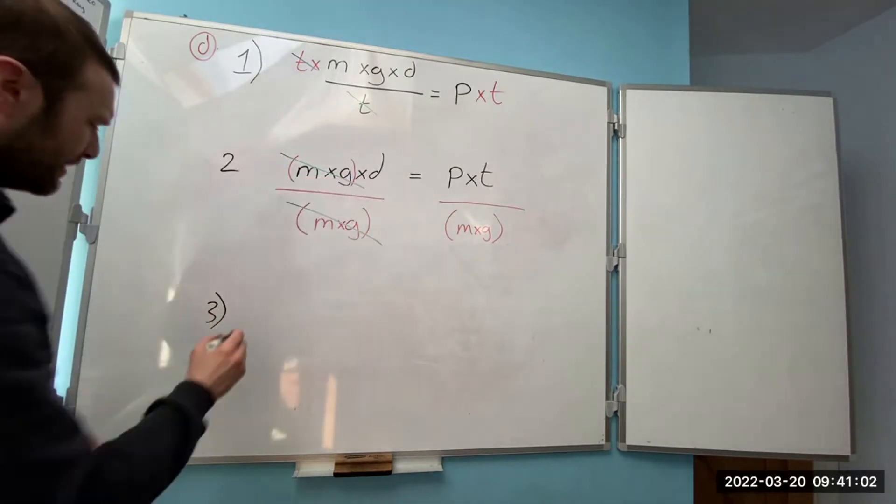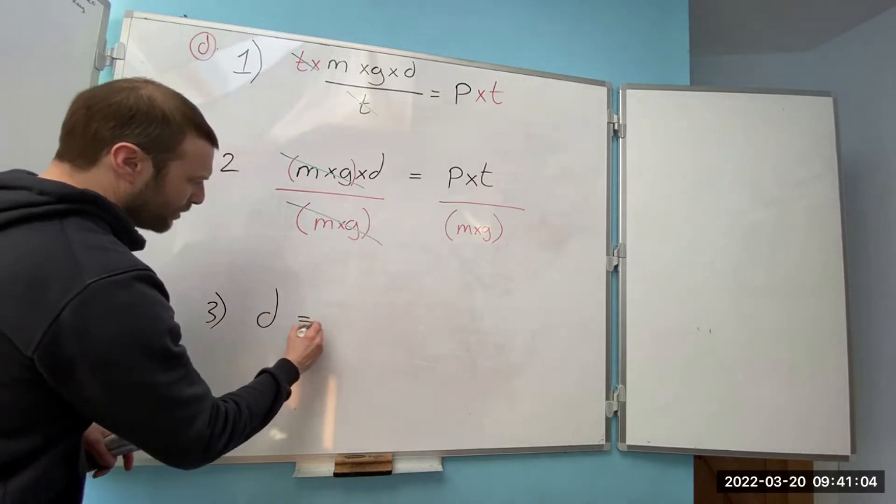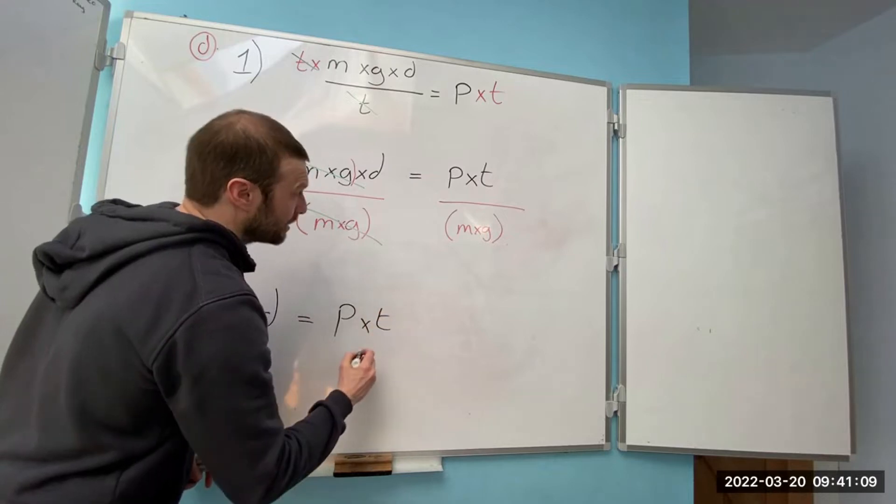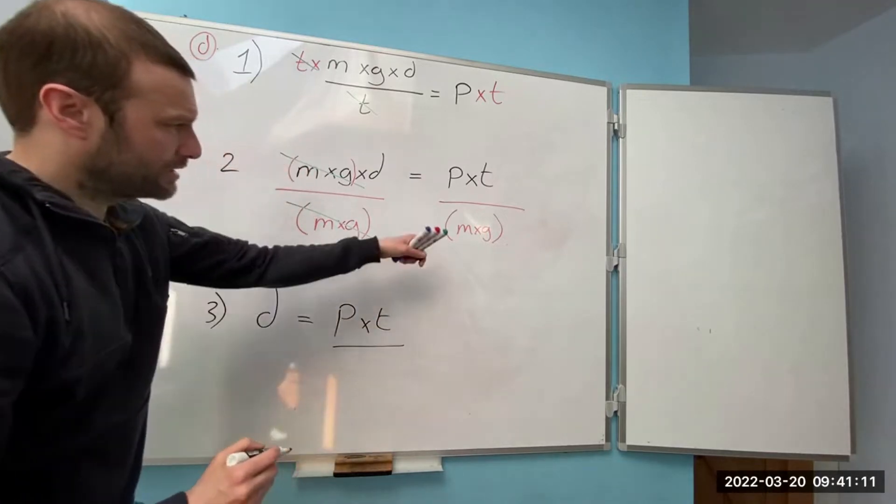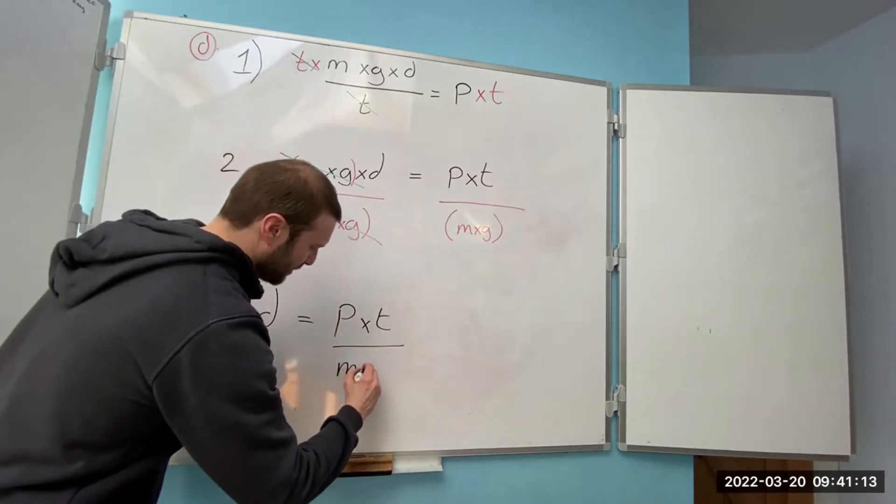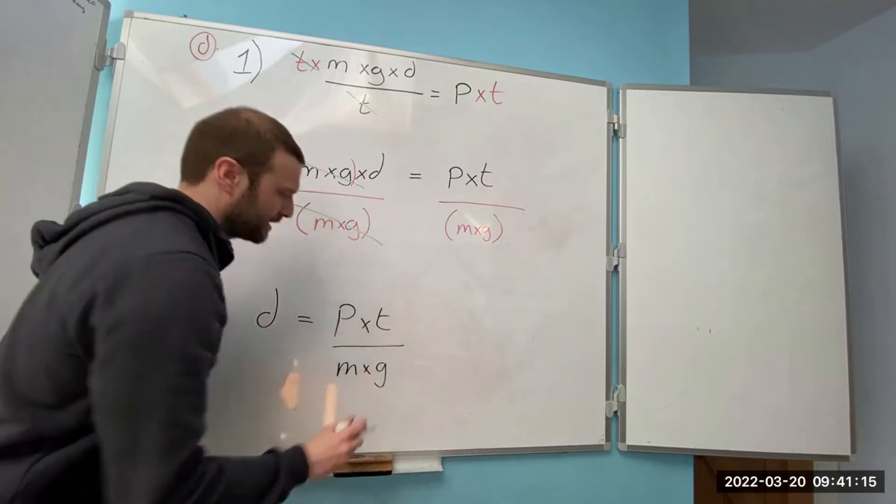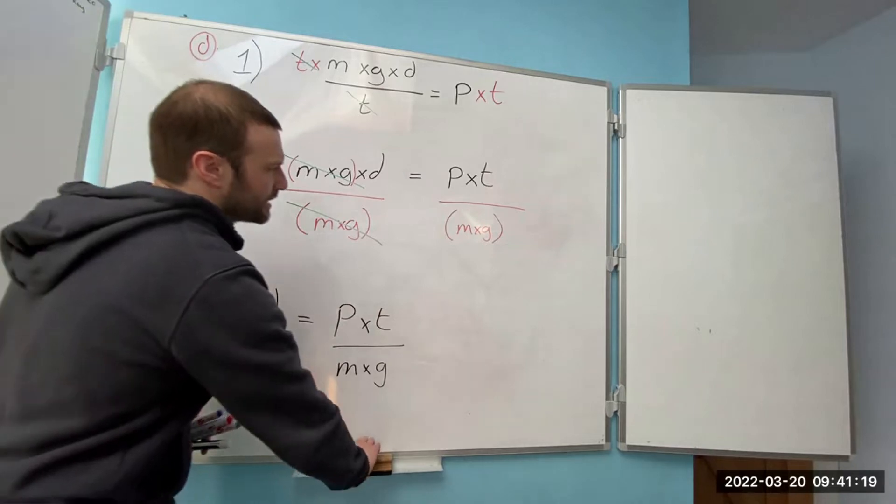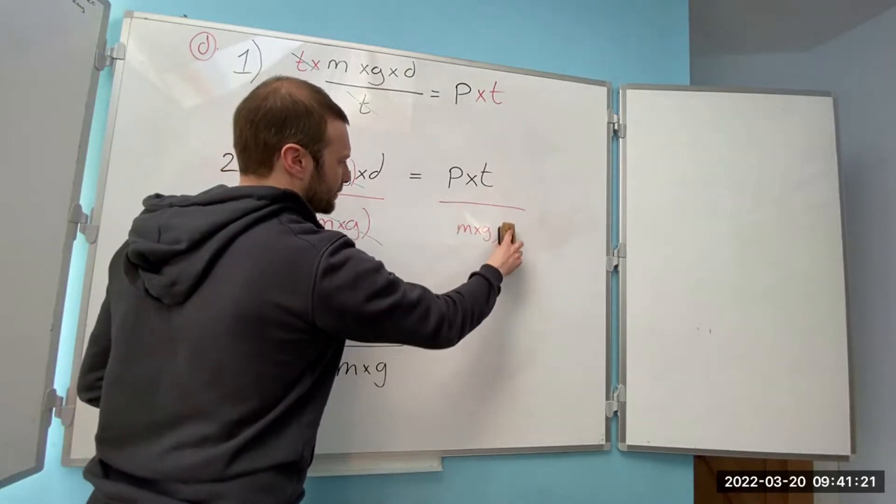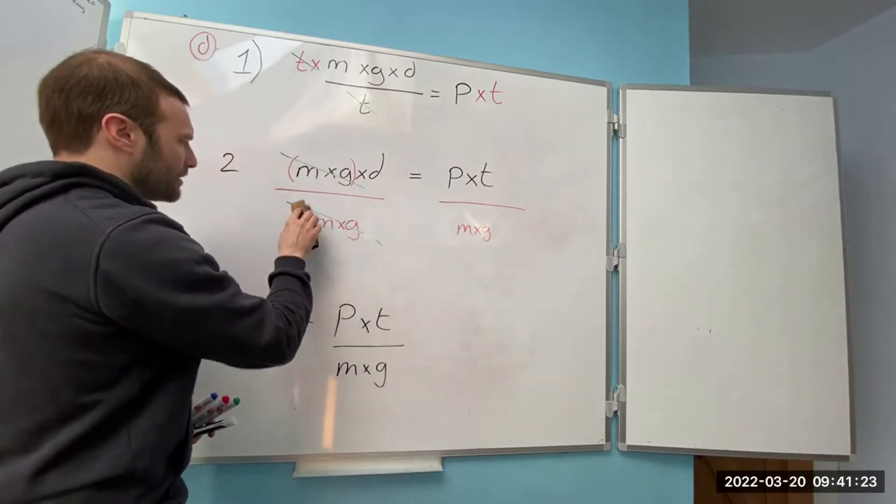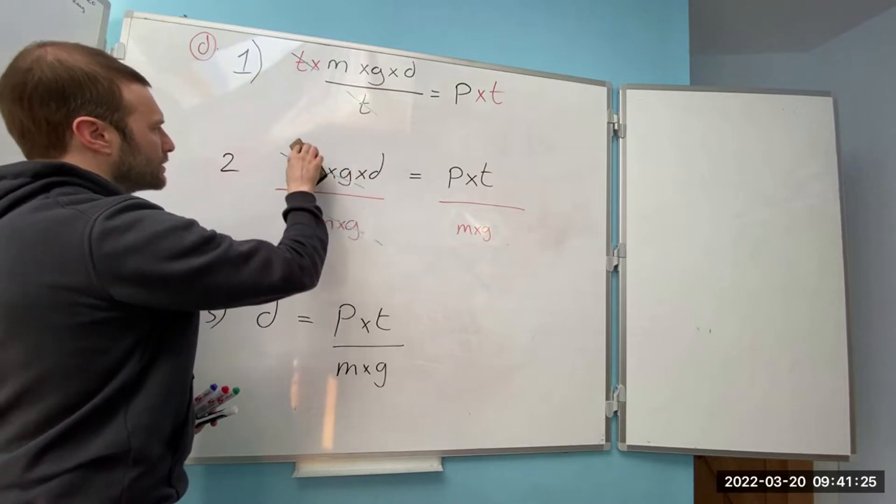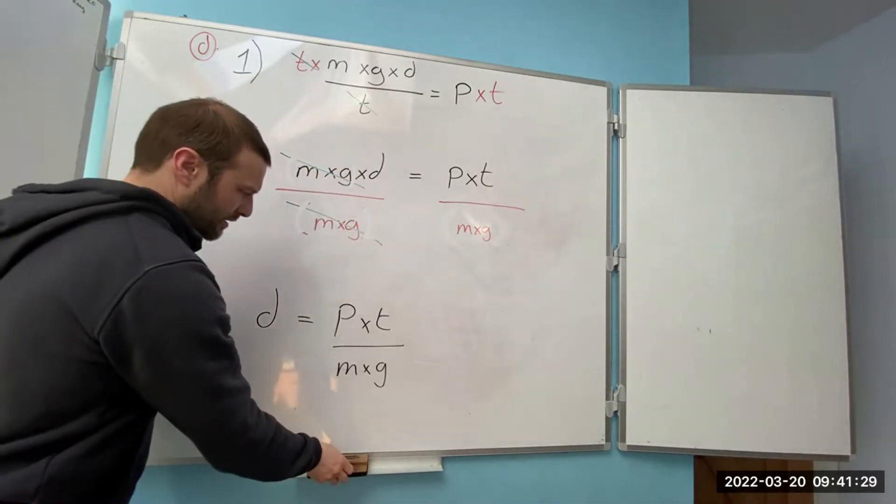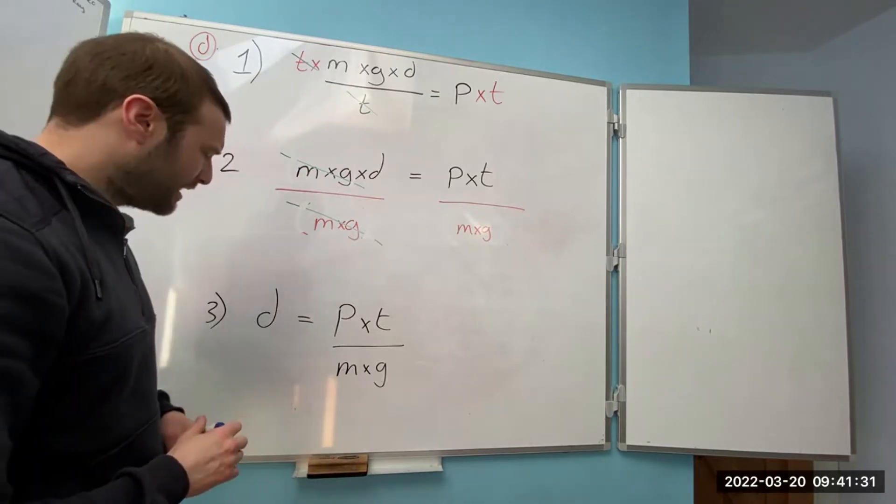So step three, I've got distance equals power times time divided by mass times gravity. I no longer need the brackets so I can just take those off again. And that's the formula, it's easy as that.